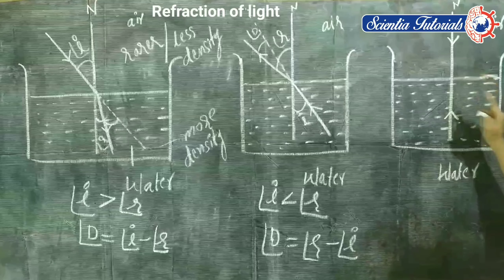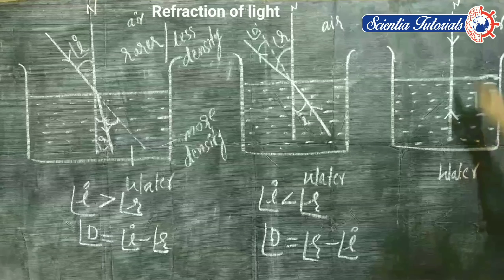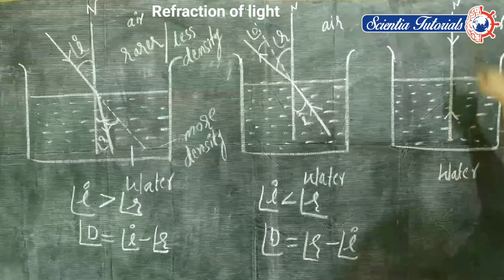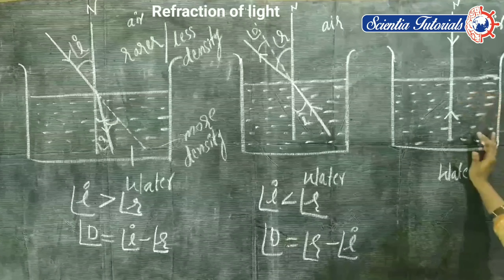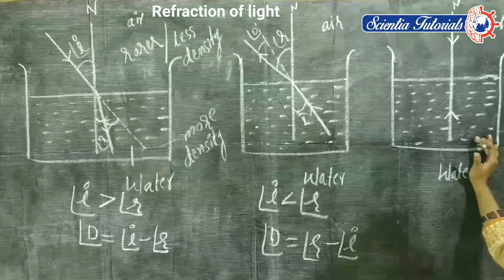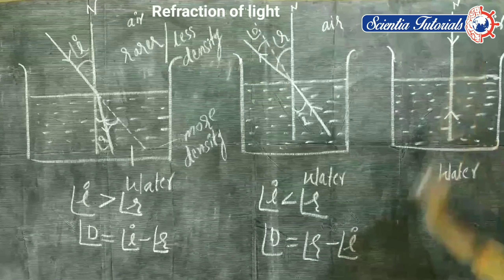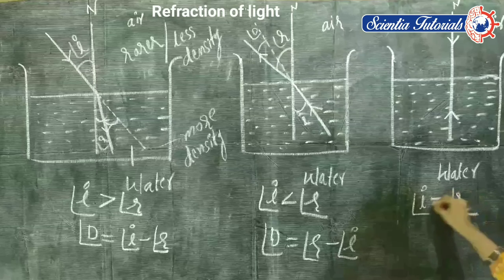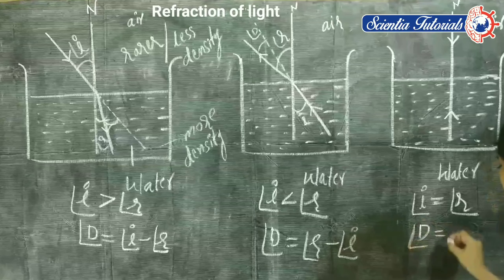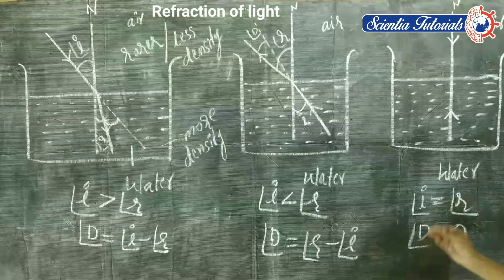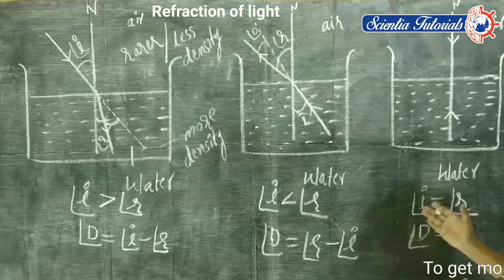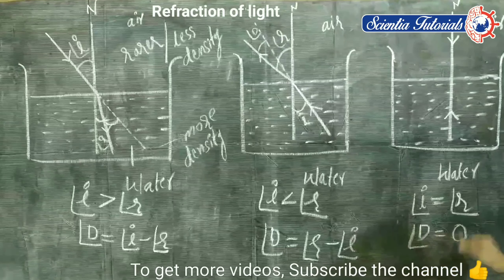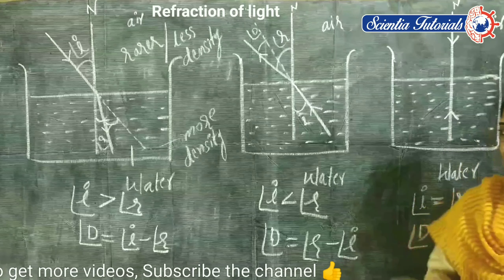The third condition: when the light ray travels from one medium to another medium along the normal, we will not observe any deviation of the light ray. There is no deviation. Angle of incidence equals angle of refraction, and since both are equal, angle of deviation equals zero — just like x minus x equals zero.